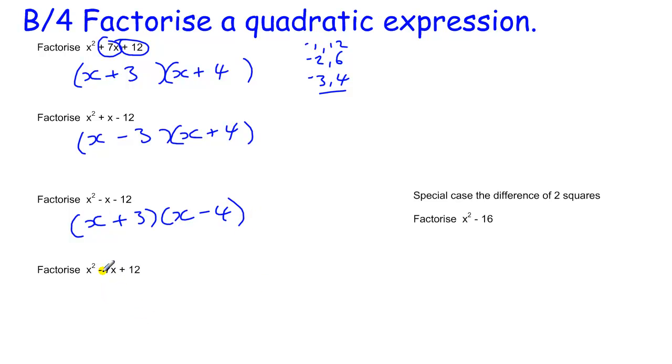And the last combination is where there's a negative in the middle and a plus here. The only way you can get this is if both sets of numbers are negative. So you could have minus 1, minus 12, minus 2, minus 6. Because when you multiply two negatives, you get a positive. Minus 3, minus 4.